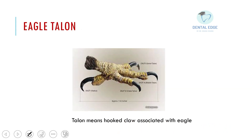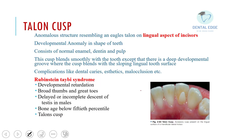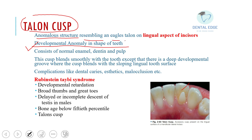It is called a talon's cusp because it resembles an eagle's talon — the claw of an eagle. We are reading this from the chapter on developmental disturbances, so it is a developmental anomaly in the shape of the tooth. It is an anomalous structure resembling an eagle's talon, present on the lingual aspect of incisors.